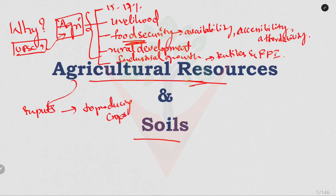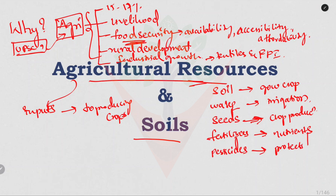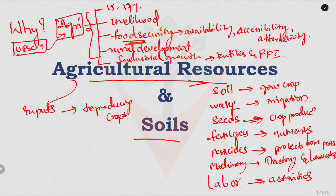These inputs include: first and foremost, soil to grow any crop; second, water for irrigation; next, seeds for crop production; fertilizers — nutrients which enhance soil fertility; pesticides to protect the crop from pests and diseases; machinery like tractors and harvesters to till the soil and harvest the crop, which improves efficiency; and also labor to carry out all the activities. These are all the resources, meaning inputs, for agriculture.